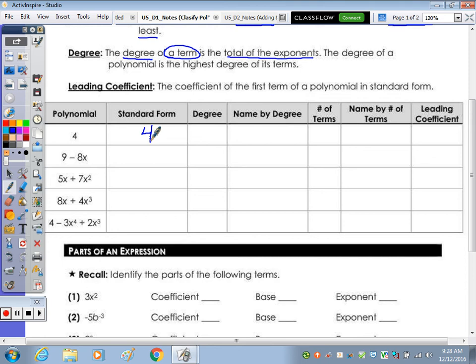9 minus 8x, we switch to negative 8x plus 9, because that x to the first, it would be our highest exponent. And there is no exponent on the 9, so you can think of that as x to the 0.